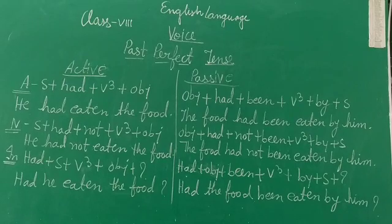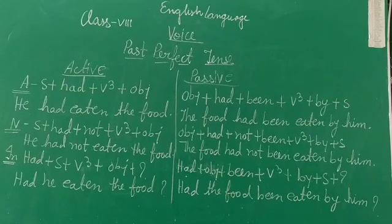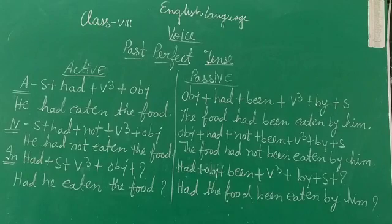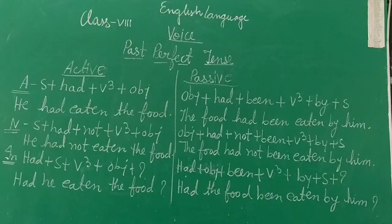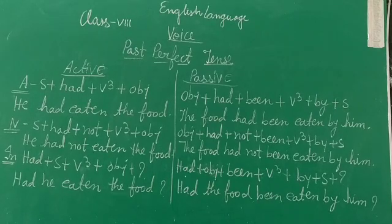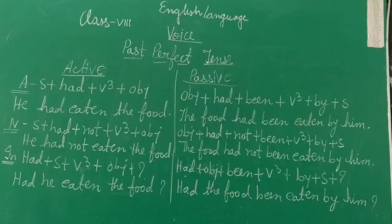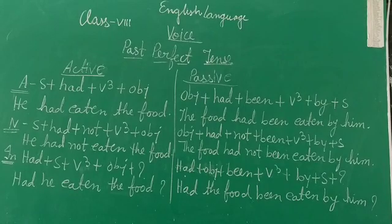If the interrogative sentence is there, it's had plus subject plus V3 plus object plus question mark. Like: had he eaten the food? Had comes at the first place in the interrogative sentence in the past perfect tense.